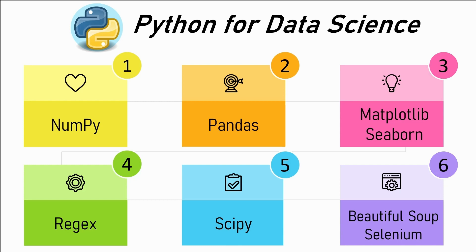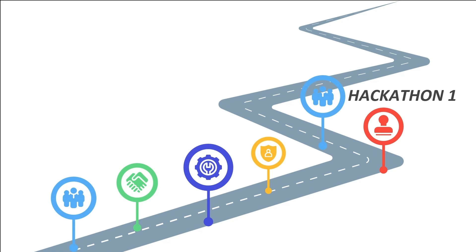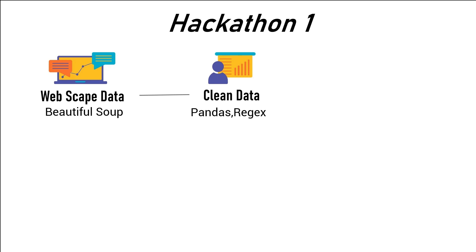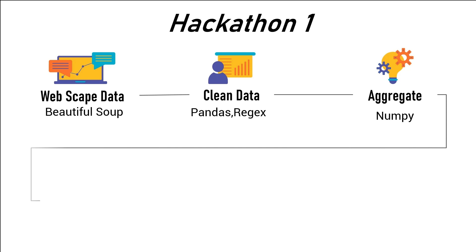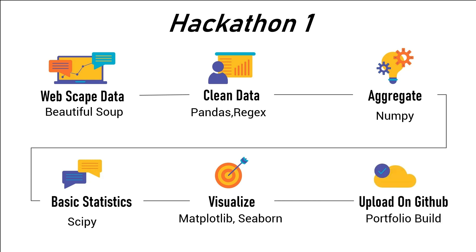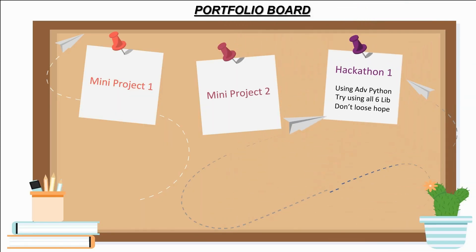After learning these libraries, it's time for hackathon number one — a self-challenge where you make an intermediate level data analysis project. Start with web scraping some data from a website using the Beautiful Soup library. Then use pandas and regex to clean that data, do aggregations and statistics using NumPy and scipy, and visualize your data using matplotlib or seaborn. Finally, upload the entire project file on GitHub, completing hackathon number one.